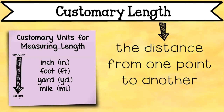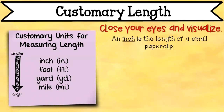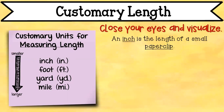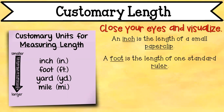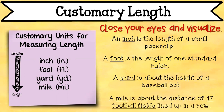The smallest type of customary unit for measuring length is an inch. It goes inch, foot, yard, and mile. Let's visualize these: an inch is the length of a small paper clip, a foot is the length of one standard ruler, a yard is about the height of a baseball bat, and a mile is about the distance of 17 football fields lined up in a row.